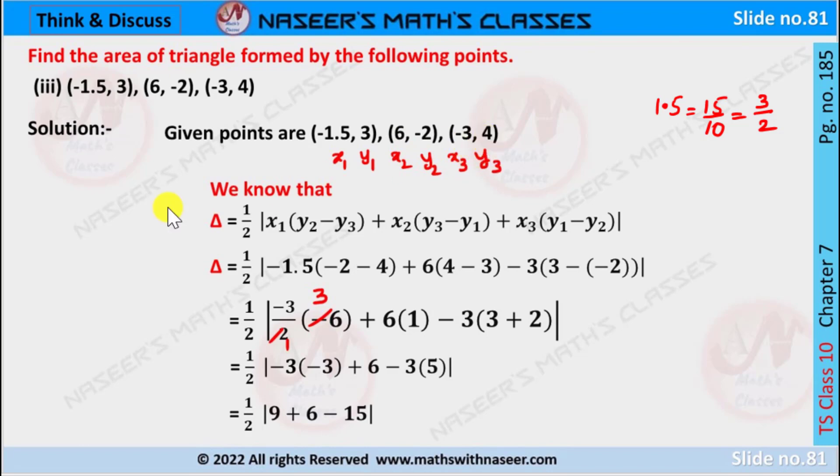We already know the area formed by the three points is given as delta equals 1 by 2 mod x1 times y2 minus y3 plus x2 times y3 minus y1 plus x3 times y1 minus y2.